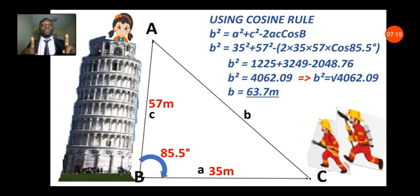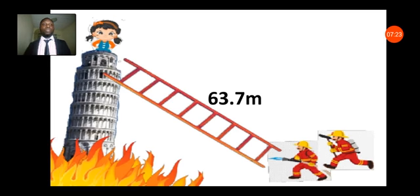Now that is the safe measurement of ladder they will need to be able to rescue the girl without getting into the fire and for the girl not getting hurt in any case. So this is one of the practical examples that we can use our cosine rule to find. Let's just review some other examples in reality.